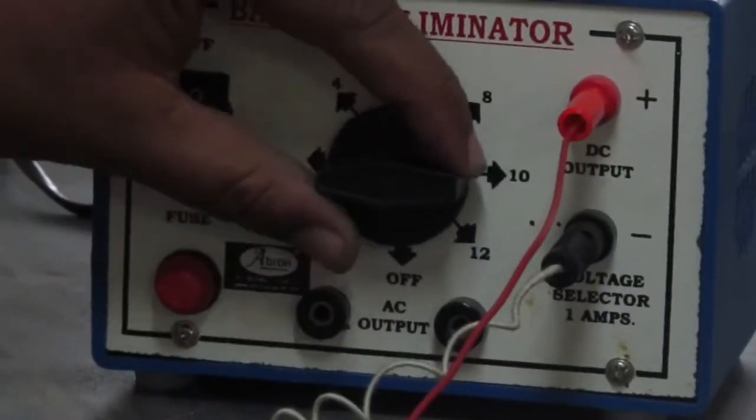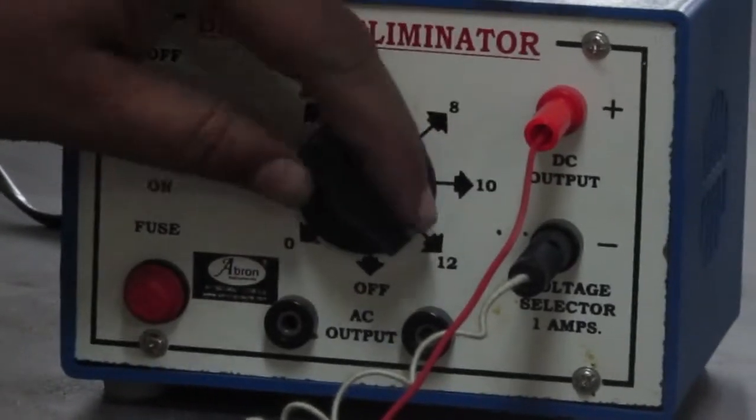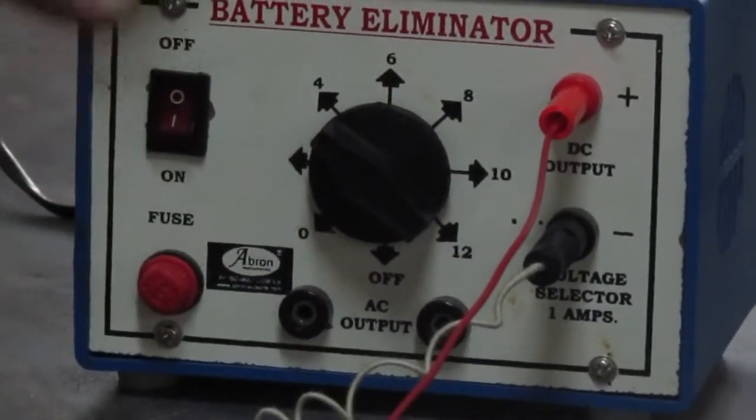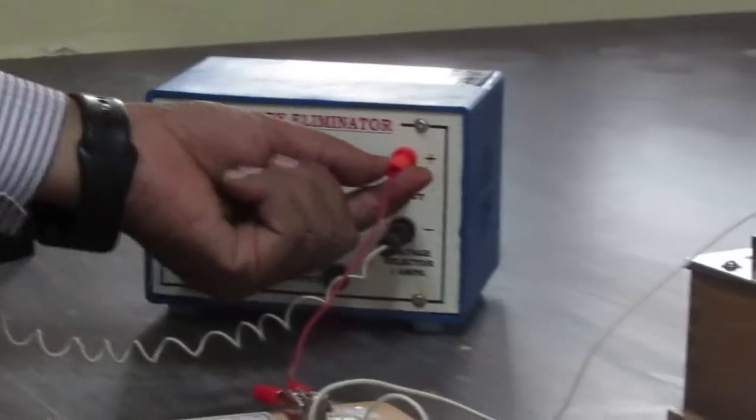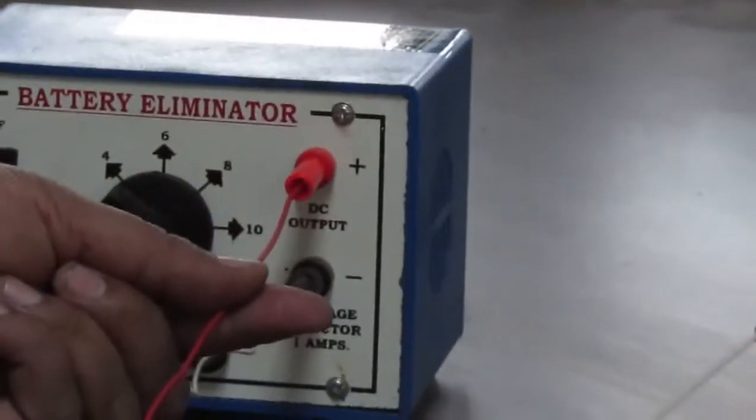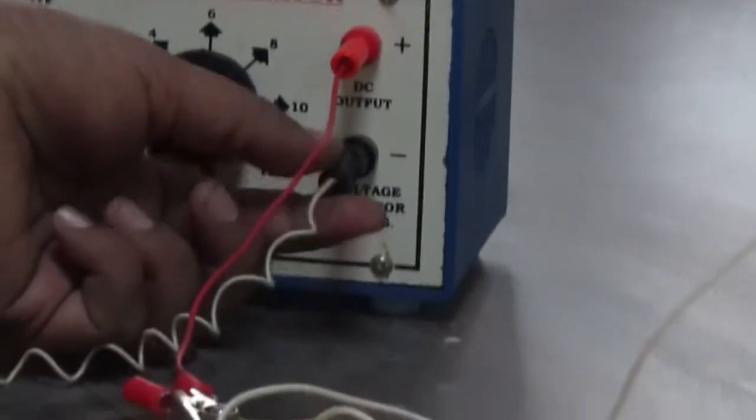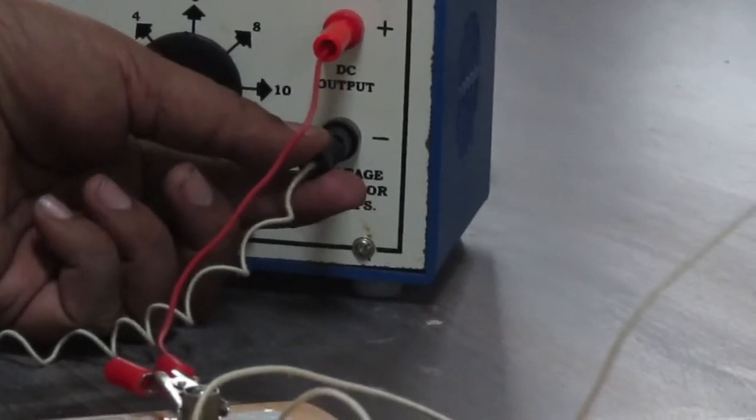We will set the values to 2, 4, 6 volts. As usual, this red is the positive end of the battery eliminator and black is the negative end.